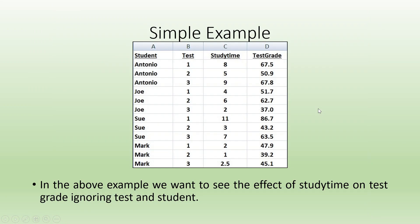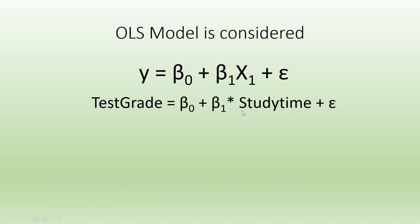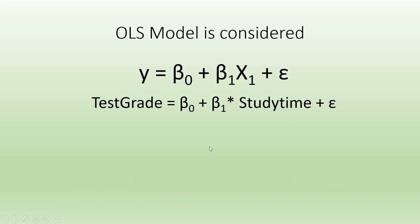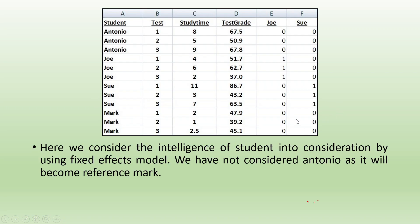Consider a simple example in which the test grade of the student is dependent upon the study time. If we don't consider the intelligence of the student or which test we are talking about, and we run the normal OLS — ignoring the effects of student as well as the test — it is known as normal OLS. So, y = β₀ + β₁X₁ + ε, meaning test grade = β₀ + β₁(study time) + error term. Now, to include the effect of the intelligence of the student, we need to introduce dummy variables.